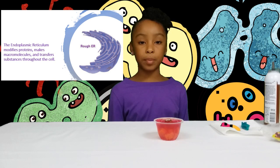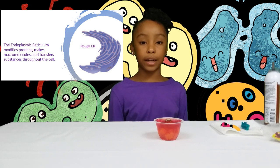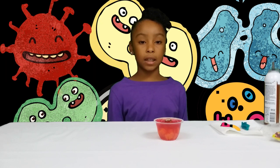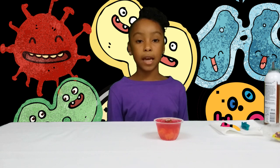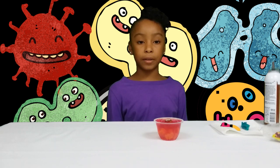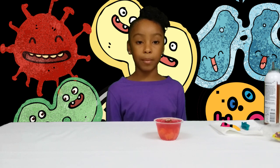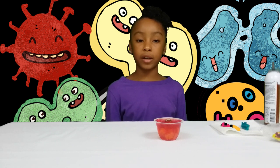The endoplasmic reticulum is the next thing we will take a look at. The green fruit roll-up will serve as the endoplasmic reticulum. It modifies proteins and sends new things throughout the cell. Think of it as a baker making and packaging your own cookies.